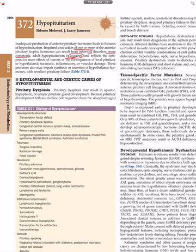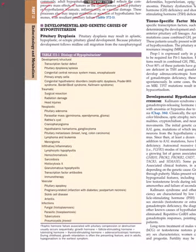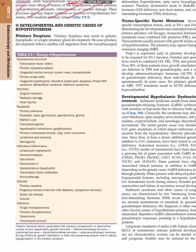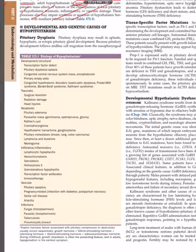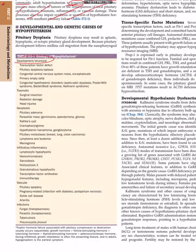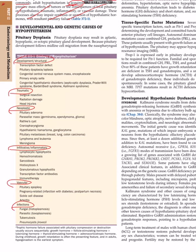Acquired hypopituitarism is mostly due to compressive mass effects of tumors, and local pituitary-hypothalamic traumatic, inflammatory, or vascular damage. The etiology of hypopituitarism includes: developmental or structural defects, traumatic, neoplastic, infiltrative, inflammatory, vascular, and infectious causes.